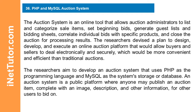PHP and MySQL Auction System. The auction system is an online tool that allows auction administrators to list and categorize sale items, set beginning bids, generate guest lists and bidding sheets, correlate individual bids with specific products, and close the auction for processing results. The researchers devised a plan to design, develop, and execute an online auction platform that would allow buyers and sellers to deal electronically and securely, which would be more convenient and efficient than traditional auctions. The researchers aim to develop an auction system that uses PHP as the programming language and MySQL as the system storage or database. An auction system is a public platform where anyone may publish an auction item, complete with an image, description, and other information, for other users to bid on.